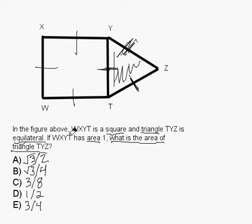It says that WXYT, which is the square, has an area of 1. So we know that the area of the square is length times width, and if the area is 1, that means that the length is 1 and the width is 1, which means that all sides are 1.